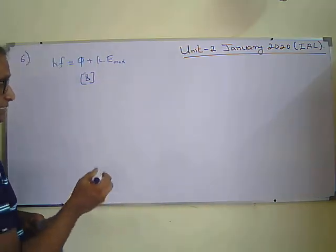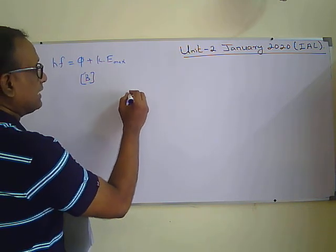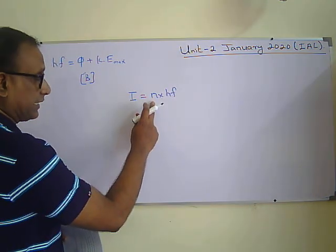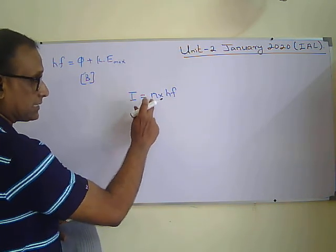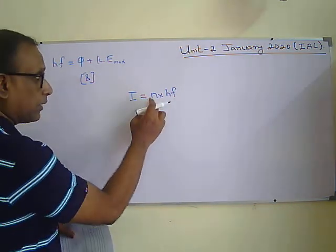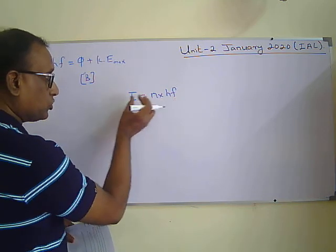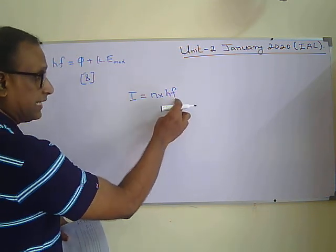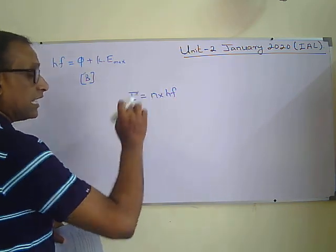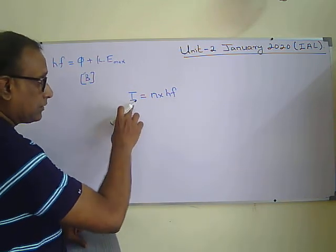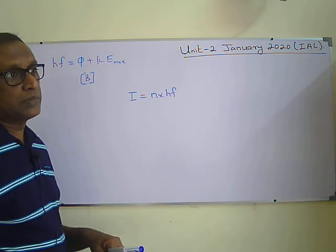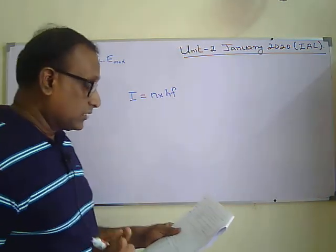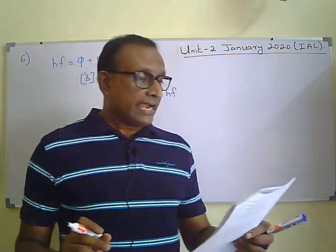Option C says increasing the intensity of light increases the maximum kinetic energy. Intensity can be expressed as I = nhf, where n is the number of photons passing through unit area per second and hf is the energy per photon. When you increase intensity at a fixed frequency, only the number of photons increases — frequency stays the same — so there is no effect on the kinetic energy of released electrons. Option C is a wrong statement.